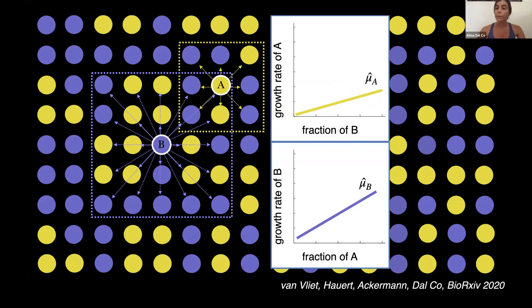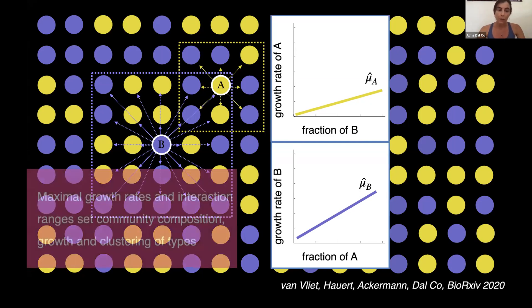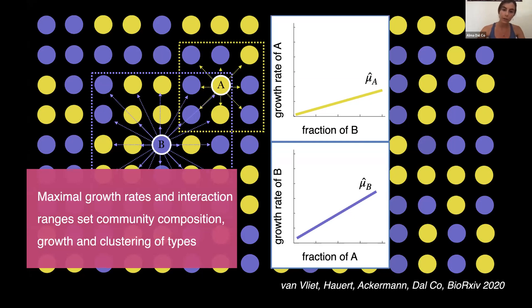Now, we built a simple mathematical framework to treat such a system. And with this mathematical framework, we were able to make some predictions. And we found out that the maximum growth rate and the interaction range of the two cell types set independently, the community composition, the growth of the community, and the typical cluster size of the two cell types.